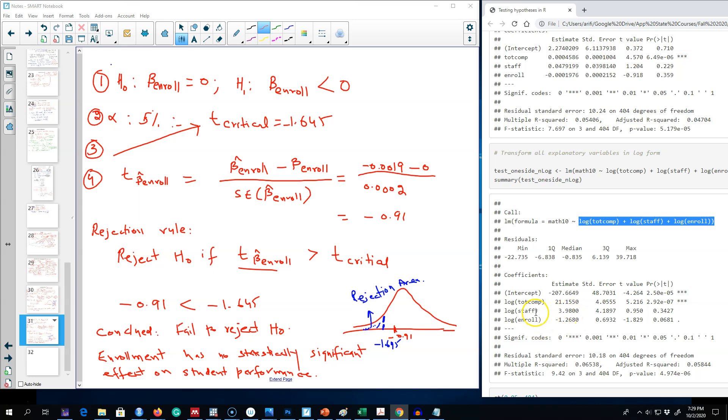I'm going to get all these coefficient values, calculate the t-value, and then compare it with the critical value to see whether we are rejecting or failing to reject our null hypothesis. Enrollment in this case has a coefficient value of minus 1.26, and we're going to divide it by the standard error, which is 0.69. This gives you a t-value of minus 1.83. Now this value lies somewhere here.